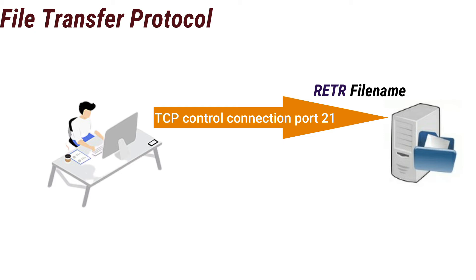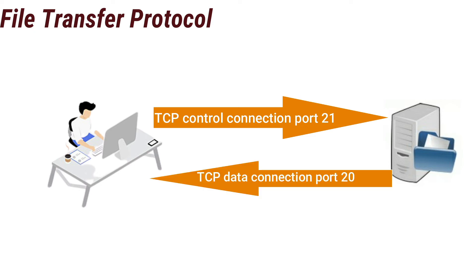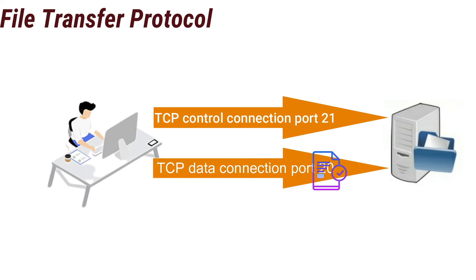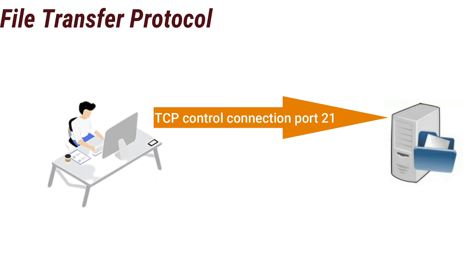When the server side receives a command for a file transfer over the control connection, the server side initiates a TCP data connection to the client side. FTP sends exactly one file over the data connection and then closes the data connection. If during the same session the user wants to transfer another file, FTP opens another data connection. Thus, the control connection remains open throughout the duration of the user session, but a new data connection is created for each file transferred.